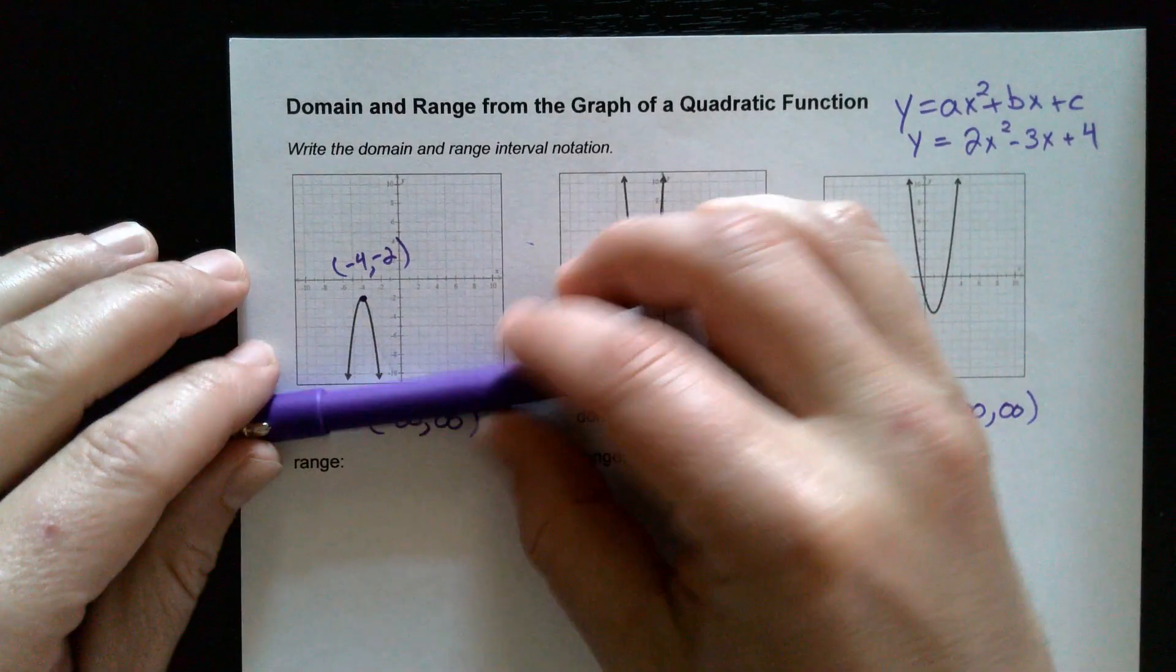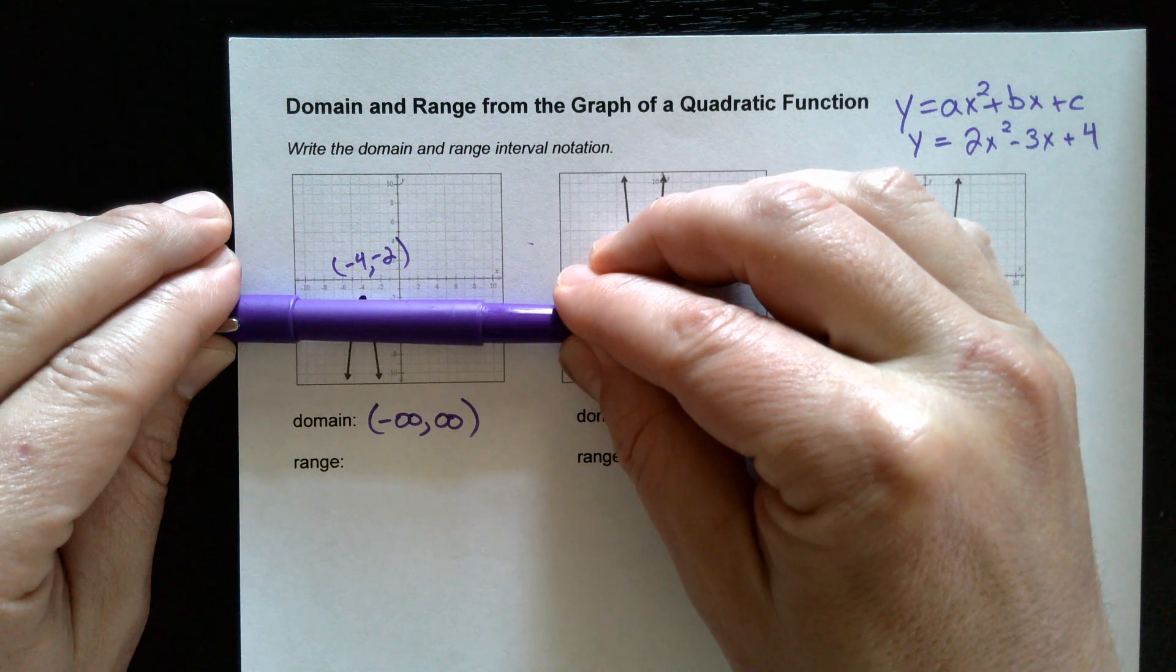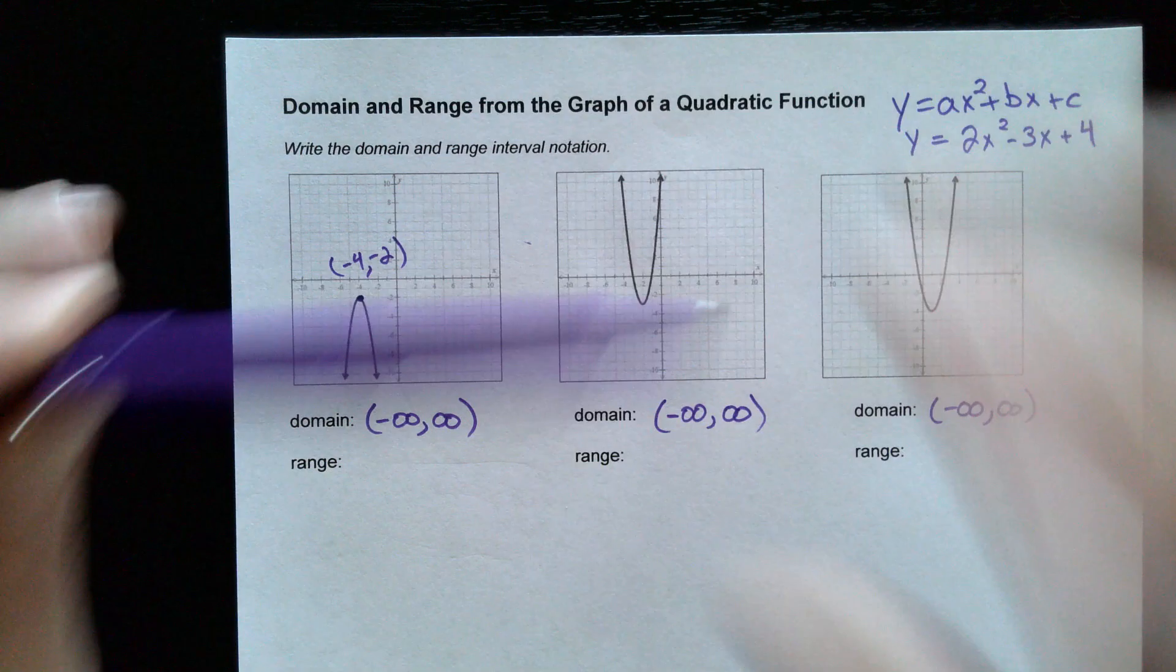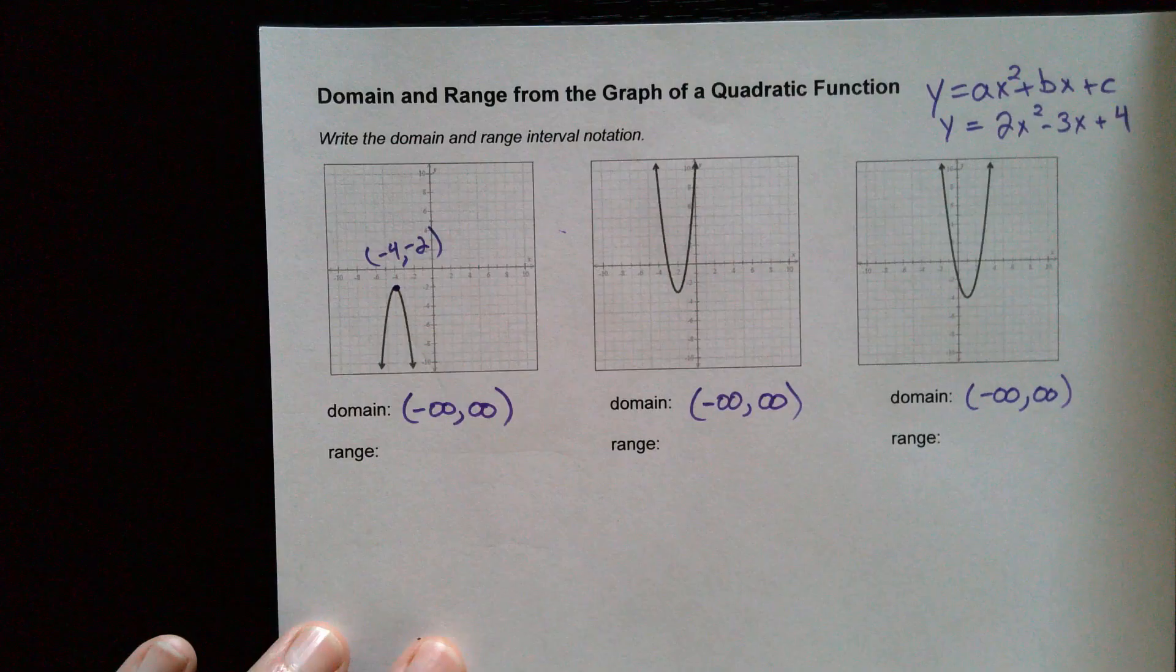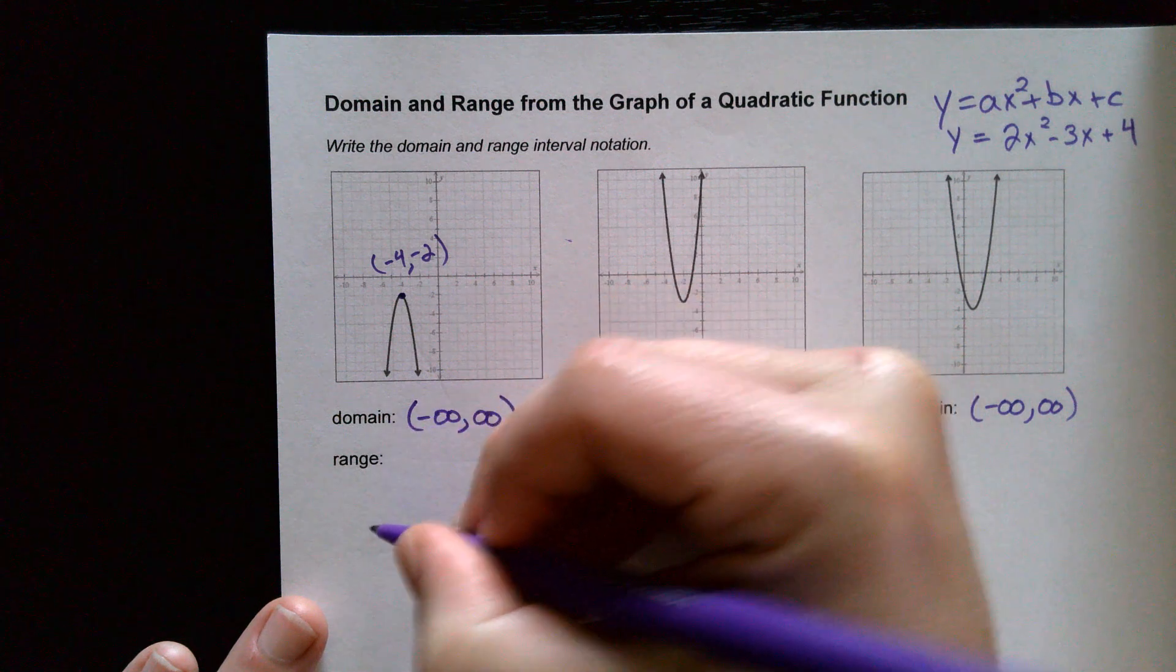In other words, if you look at the y axis and you go up here to the very top of the graph, where you can barely see it anymore, what's that y value right there? Negative 2. So that's your highest point. What is your lowest point? Well, it keeps going down towards infinity, right?